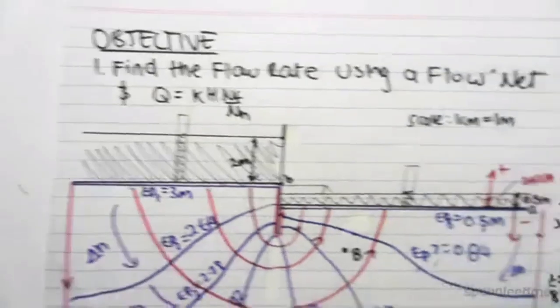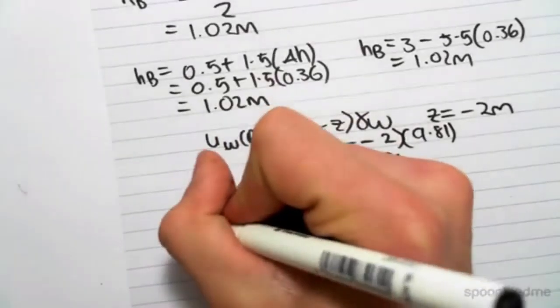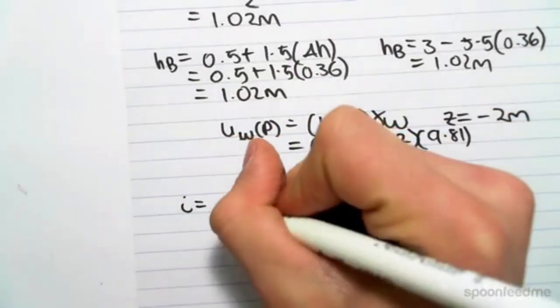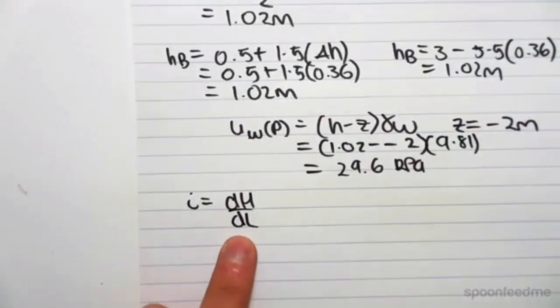The last thing we're going to do is find the hydraulic gradient at B. We know that hydraulic gradient, i, is equal to dH divided by dL. So the change in head over the change in length.